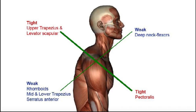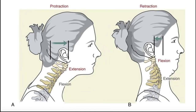When we think of motions of the cervical spine, there are usually four that come to mind: cervical flexion, cervical extension, cervical rotation, and cervical lateral flexion, also called cervical side bending. But there are two other movements, and those are cervical protraction and cervical retraction, and that's what we're going to be talking about in this video.